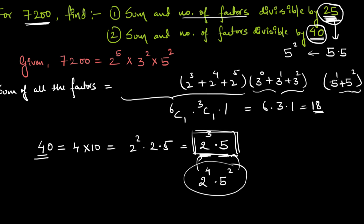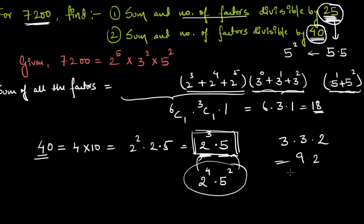Now all terms will have at least three 2s and at least one 5, so the product of this expression gives the sum of all factors divisible by 40. For the count: the 2-bracket has 3 terms (2^3, 2^4, 2^5), the 3-bracket has 3 terms, and the 5-bracket has 2 terms (5^1, 5^2). So total = 3 × 3 × 2 = 18 factors divisible by 40.